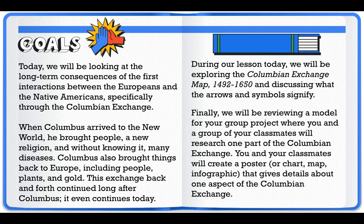This exchange back and forth continued long after Columbus — it even continues today. During our lesson today, we will be exploring the Columbian Exchange map from 1492 to 1650 and discussing what the arrows and symbols signify. Finally, we will be reviewing a model for your group project where you and a group of your classmates will research one part of the Columbian Exchange and create a poster, chart, map, or infographic that gives details about one aspect of the Columbian Exchange.